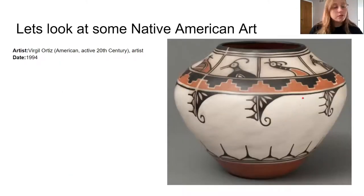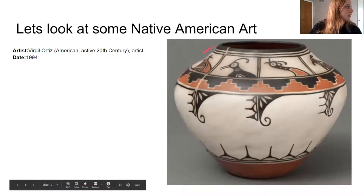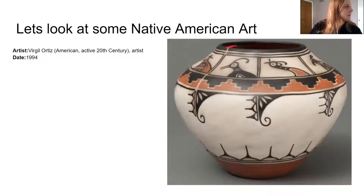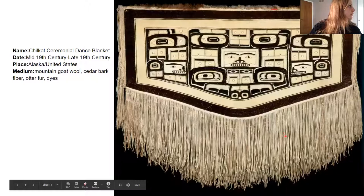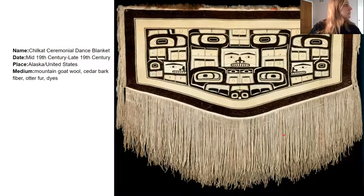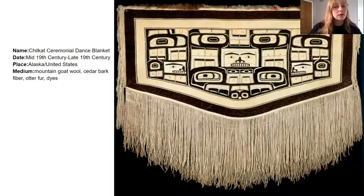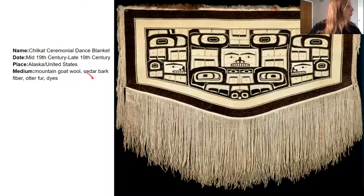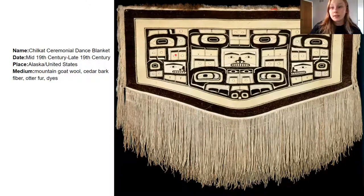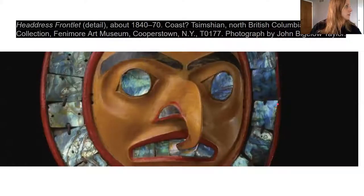So let's look at some Native American art. You can see the different pictures. This is a little bit newer of a pottery made in 1994, but I see the pictograph pictures of birds here around the top and then these other different symbols. This is a ceremonial dance blanket from Alaska, the United States. There are people up in Alaska too that were Native Americans, and still are. And this is made out of mountain goat wool, cedar bark fiber, otter fur, and dyes. So they used what they had in their environment to make their art. And you can see the pictograph images here too.